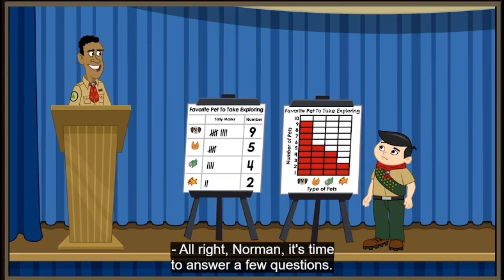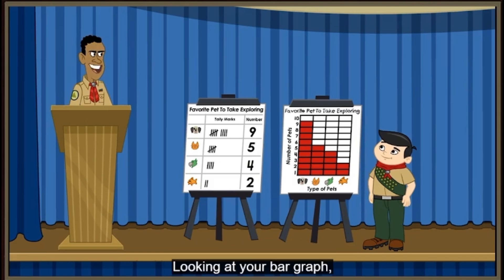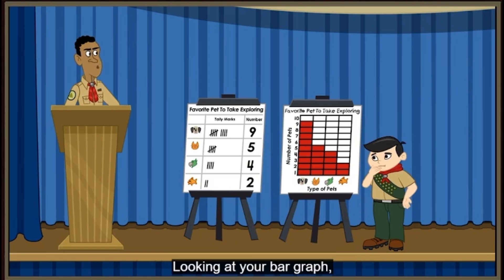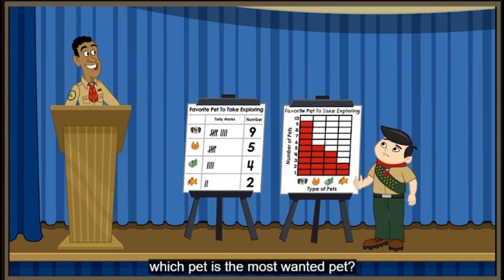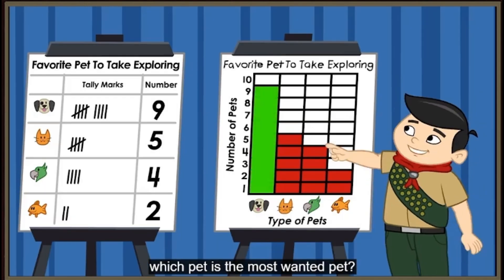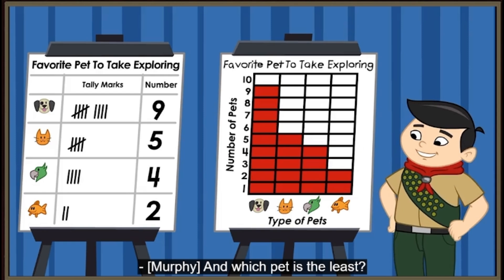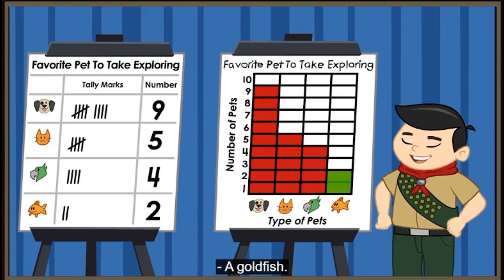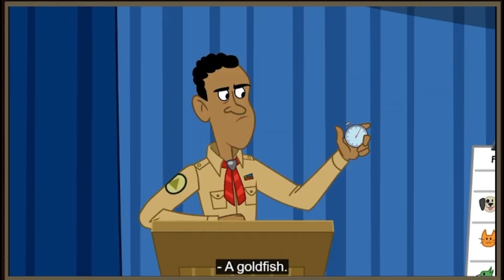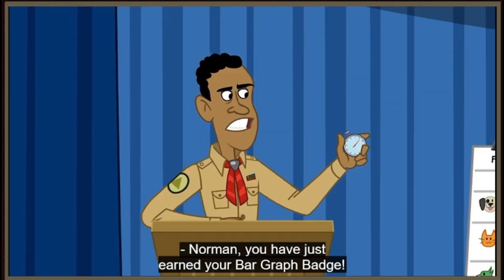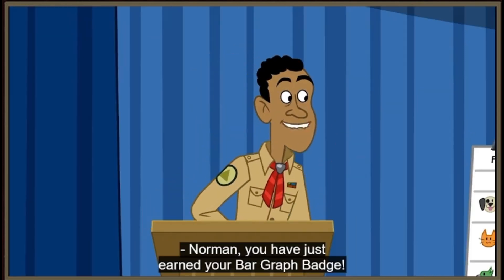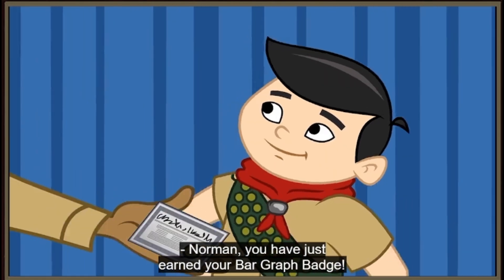All right, Norman, it's time to answer a few questions. Looking at your bar graph, which pet is the most wanted pet? A dog. And which pet is the least? A goldfish. Norman, you have just earned your bar graph badge.